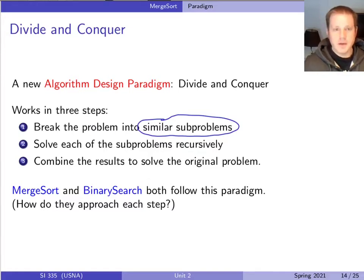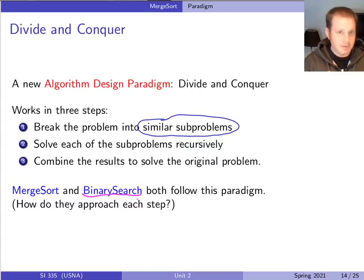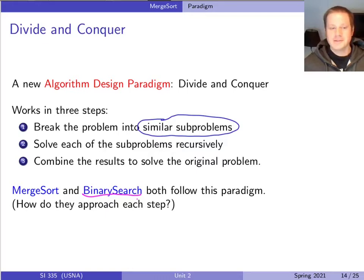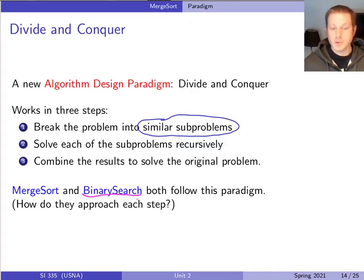Binary search is another algorithm we saw that worked like this, although it's a little less obvious how binary search fits into the 'solve each sub-problem recursively' pattern, because in binary search you only really have one sub-problem. What happens is you look at the middle of the list, and then you have two problems — searching the left and right sides — but one becomes trivially easy because you know what you're looking for isn't there. So binary search is a divide and conquer where one sub-problem is always trivially answered, and you focus on the other one.